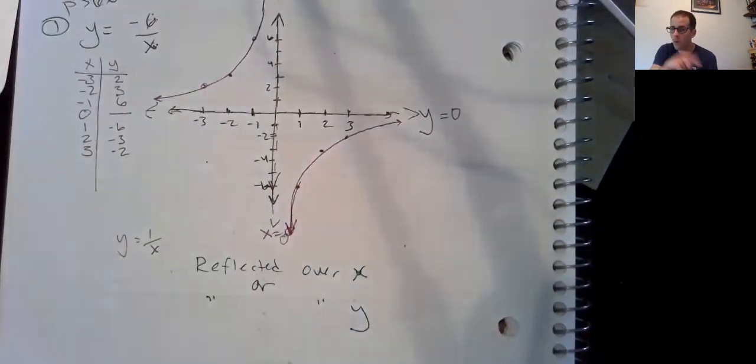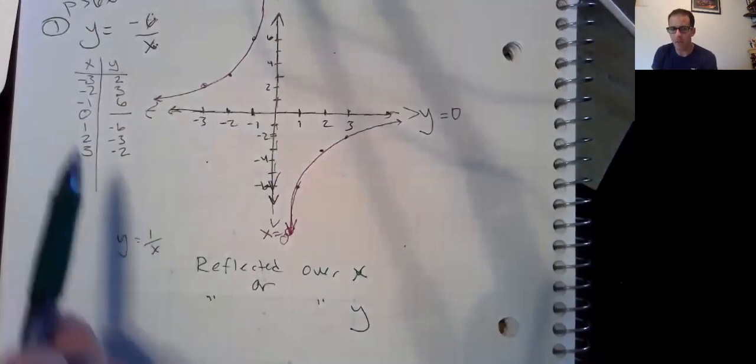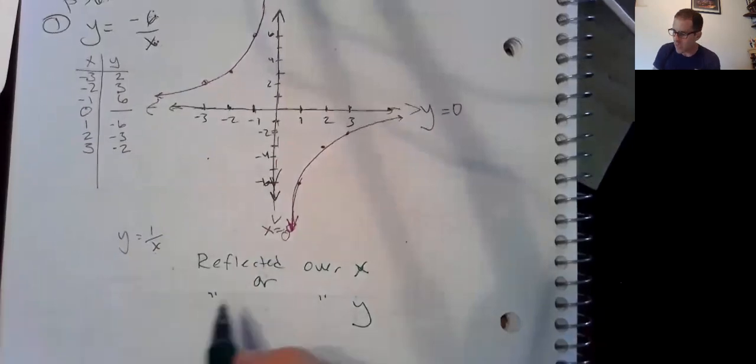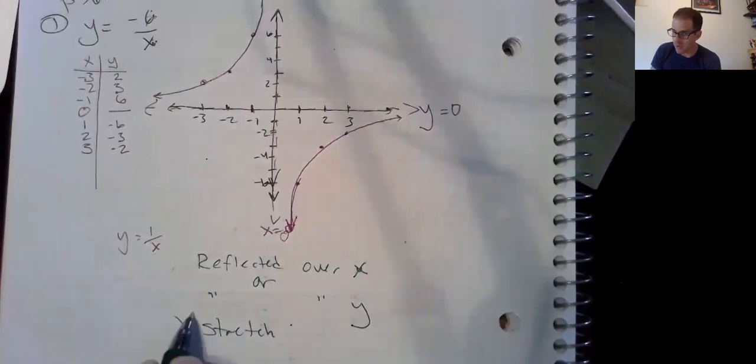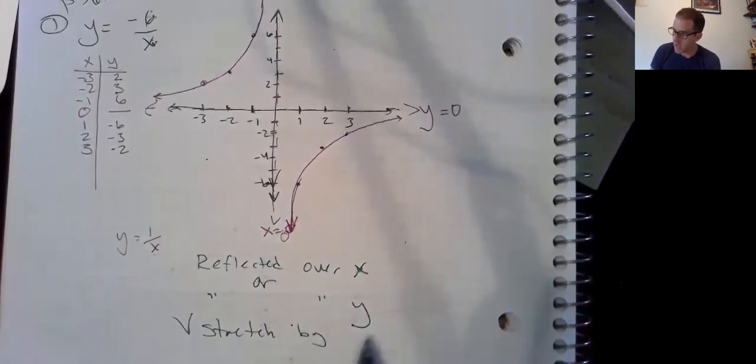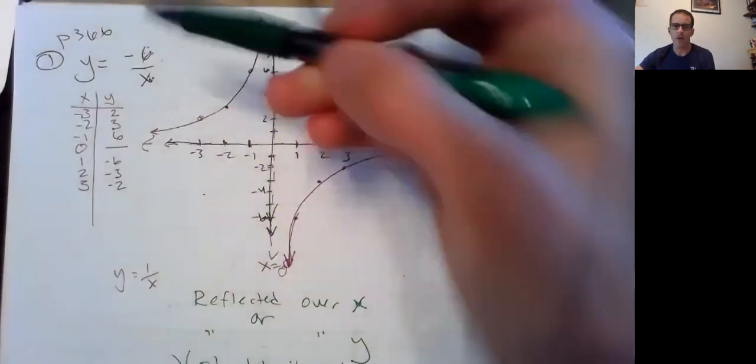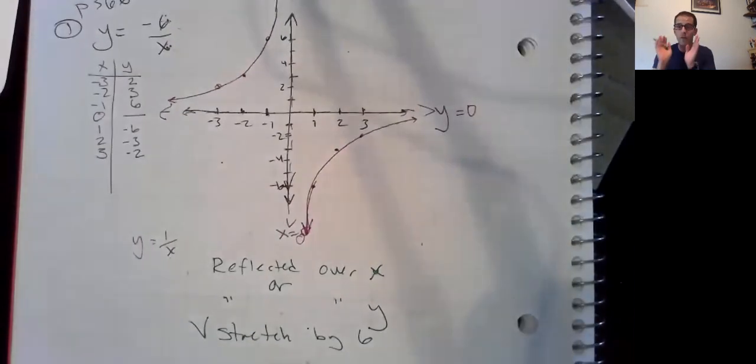And then finally, though, our old one, our parent function y equals one over x, that had fractions in it when we plugged in one, two, and three, negative one, negative two, and three. But these have integers. Those small fractions, they became integers. So we can take an educated guess that there was a stretch, a vertical stretch by six. Where did I get the six from? Right there.